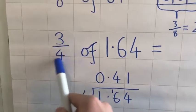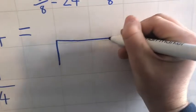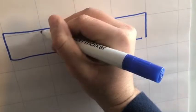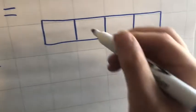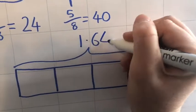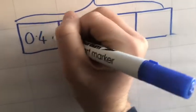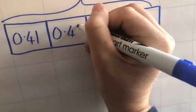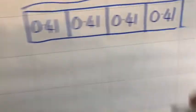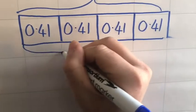So let's go back to drawing our diagram. We're finding quarters, so my diagram is going to be split into four. And then the whole thing is worth 1.64. And as we found down here, each quarter is worth 0.41. Now I need to find three quarters, so I'm going to—there's my three quarters.